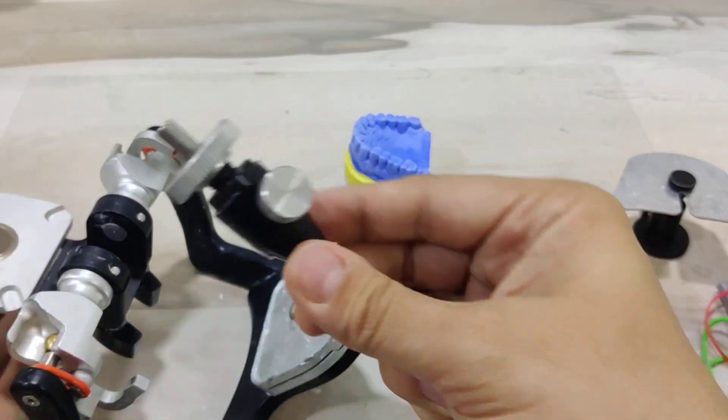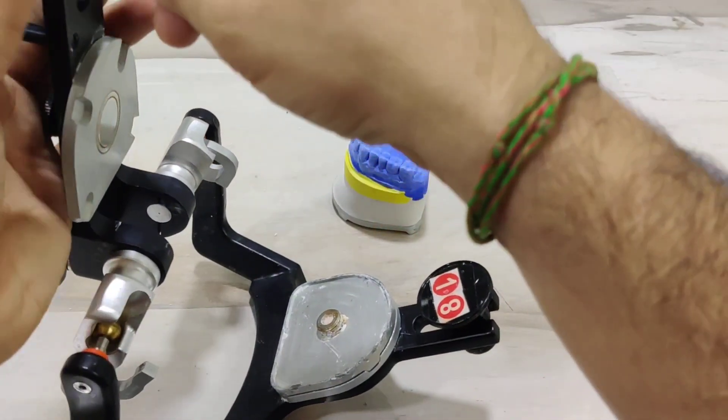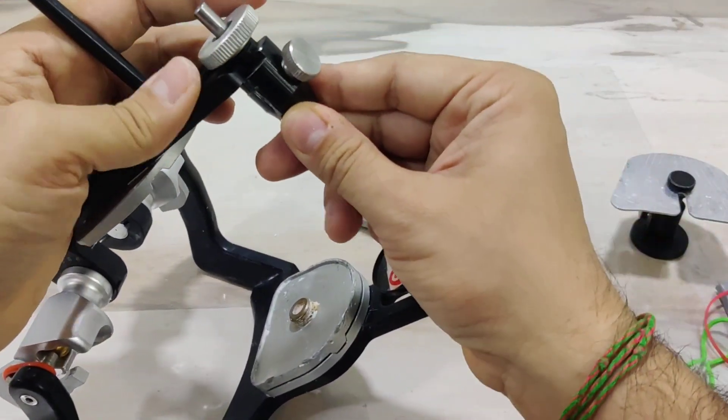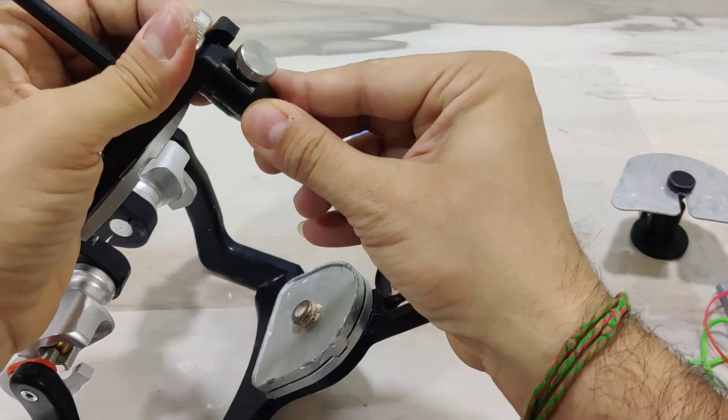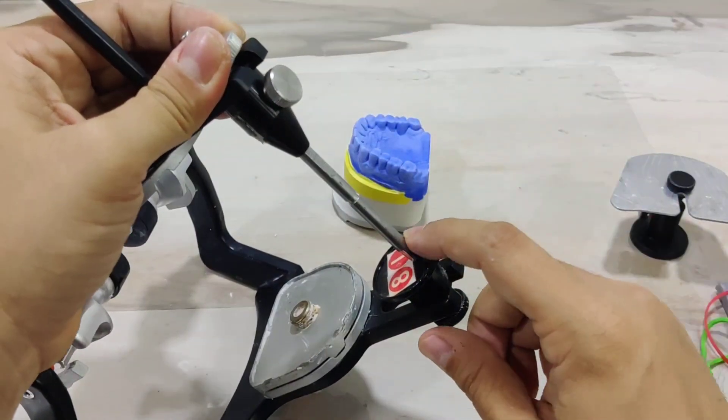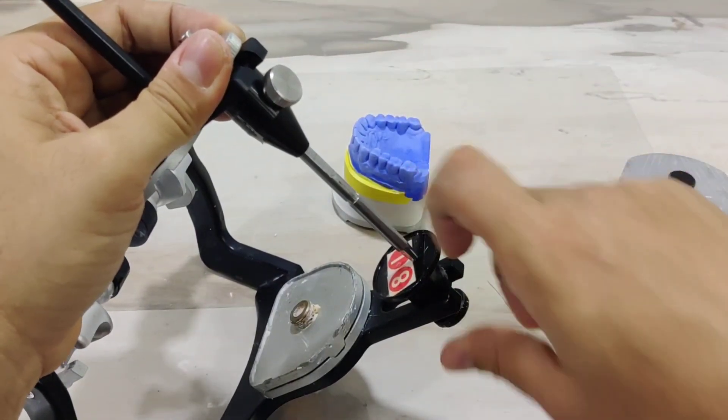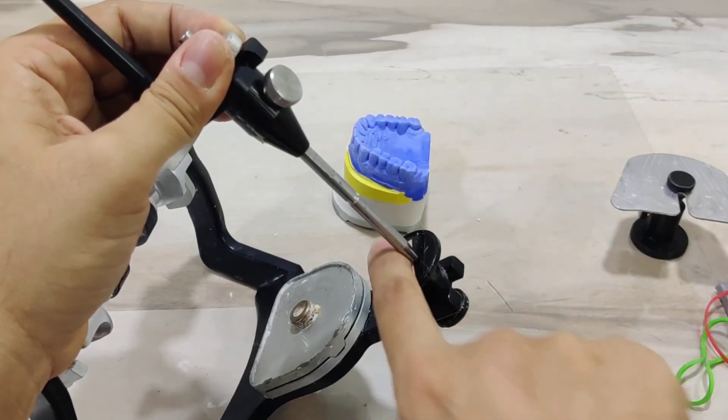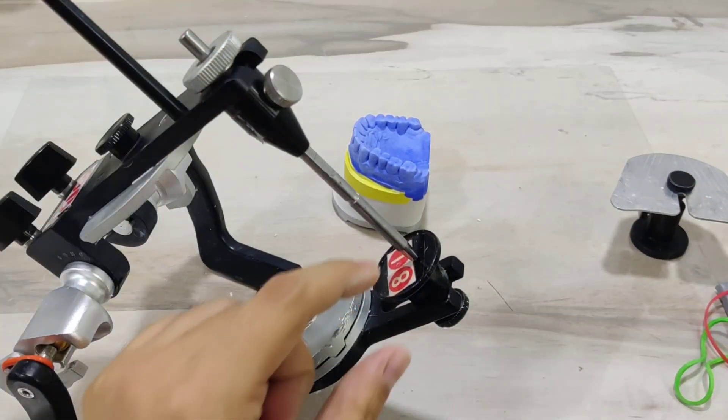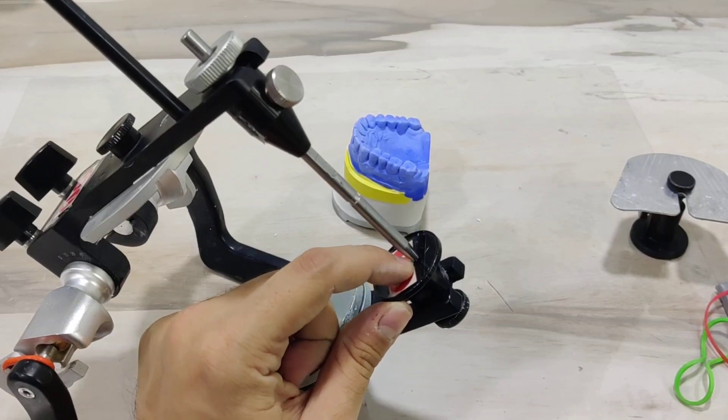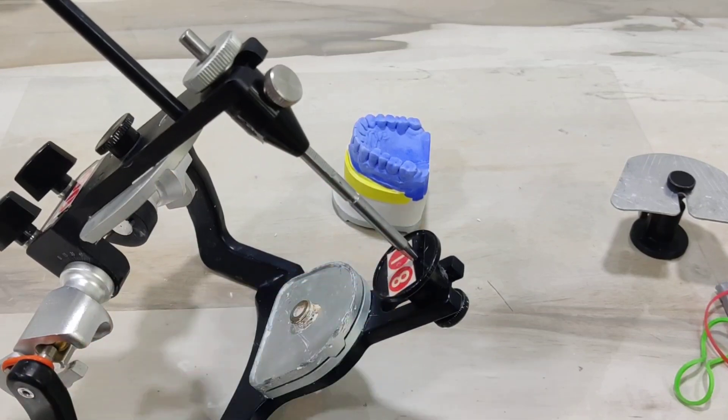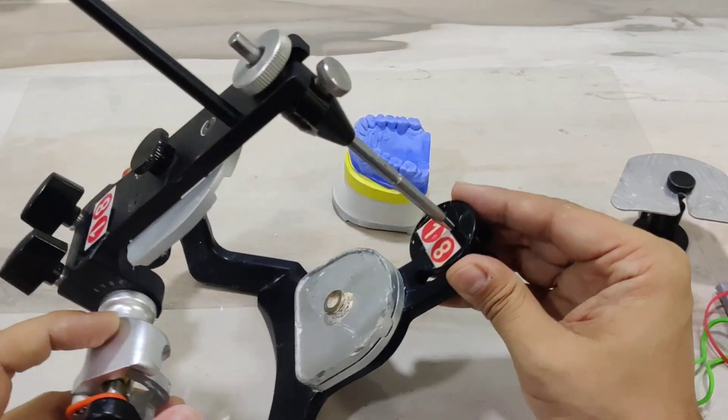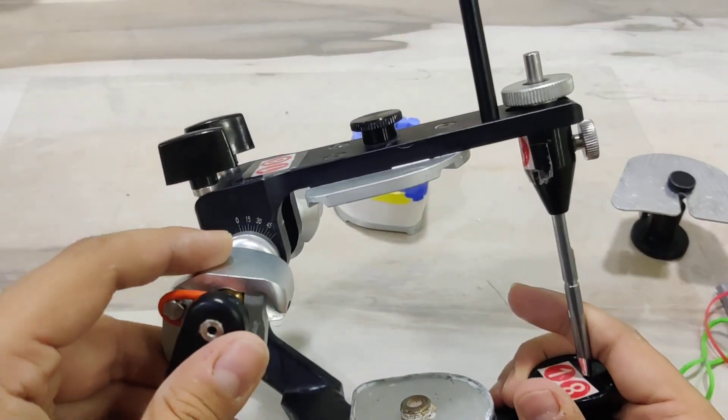We keep the incisal pin at plus five and connect it to its proper location, which is on the top of this rim. Now the incisal pin is supposed to go and touch the incisal table. Because I'm using a flat table here, it actually does not matter whether the pin touches the center, towards the back, or towards the front. Now that this is done, I look at the back of the articulator.